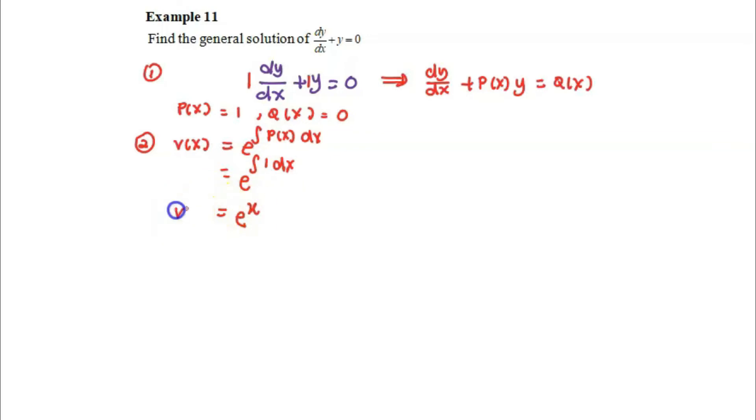Third step is to multiply the v(x) obtained in step 2 to the differential equation in step 1. Please make sure that the v(x) is multiplied to the differential equation which is in standard form.